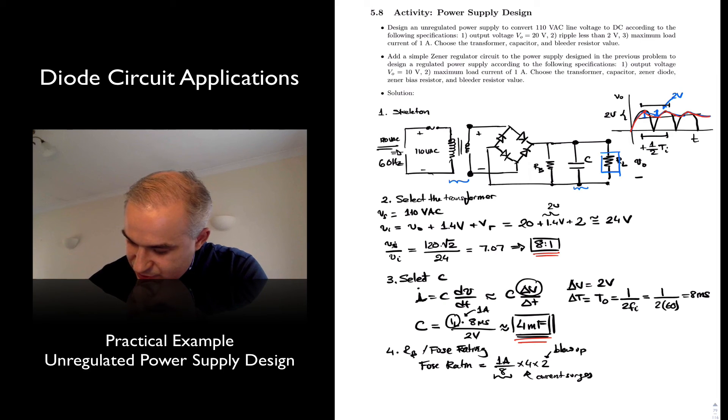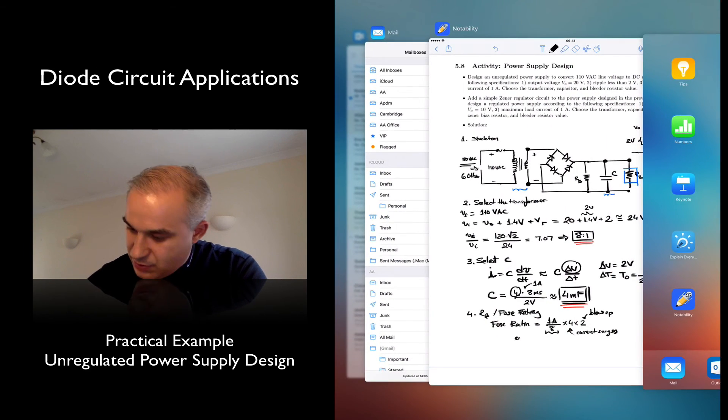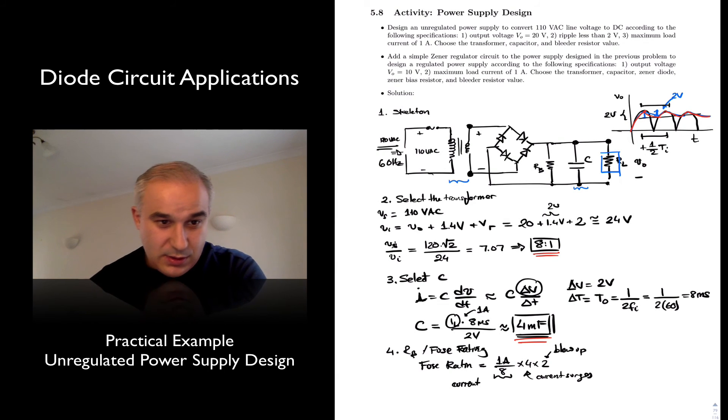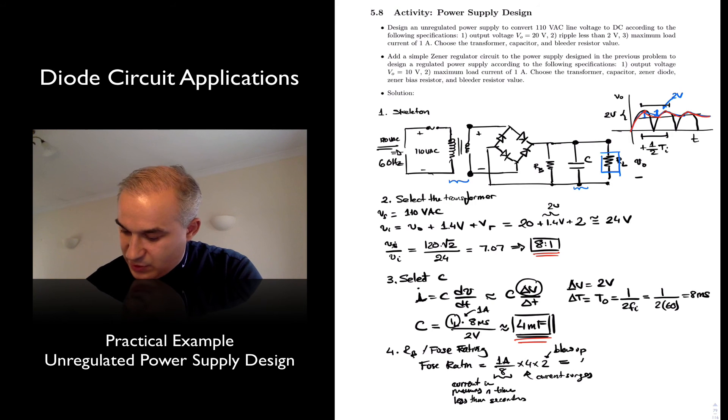So I'm going to say here, current in primary, n times less than secondary. So you may want the 1 amp rating. Okay?